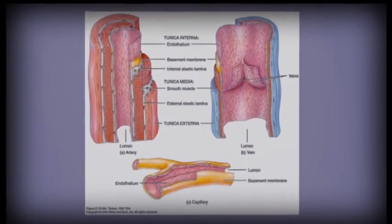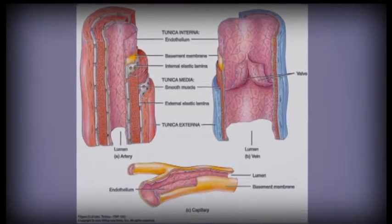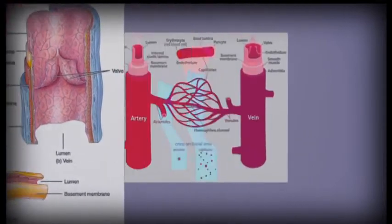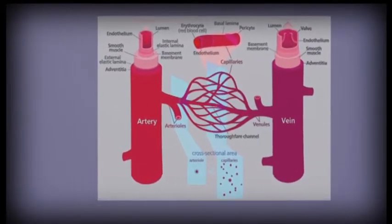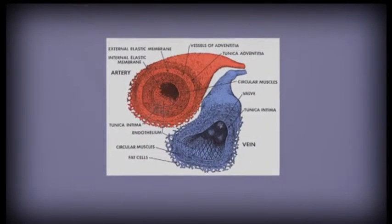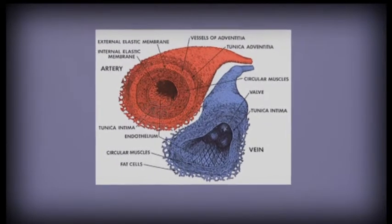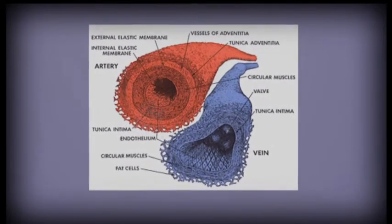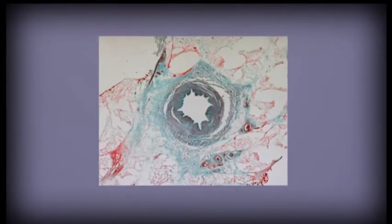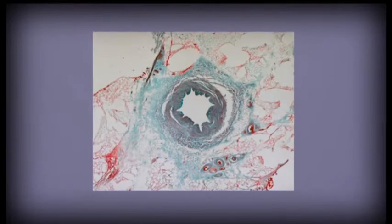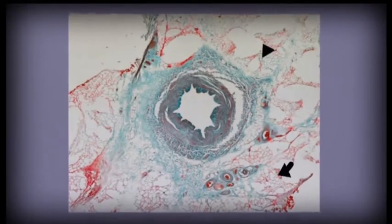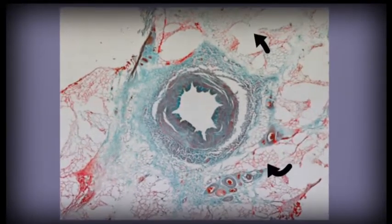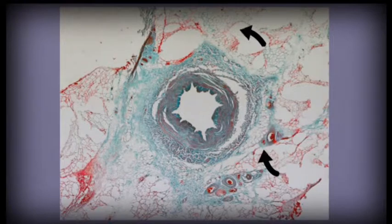Physiology textbook diagrams often show blood vessels as layered tubes, omitting the sympathetic nerves and fat cells that surround most large vessels. In this light microscope image, adipose cells can be seen all around the vessel wall of a human saphenous vein, a vessel that is often used for cardiac bypass surgery.